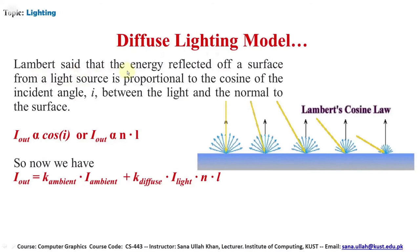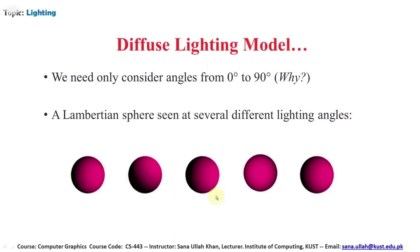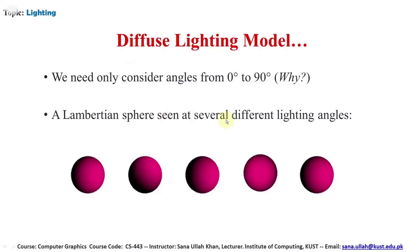The Lambert diffuse lighting model is calculated using Lambert's law: the energy reflected from a surface from a light source is proportional to the cosine of the incident angle i between the light and the normal to the surface. So I_out ∝ cos(i), or I_out ∝ N·L. The full equation is: I_out = K_ambient × I_ambient + K_diffuse × I_light × cos(i). We need only consider angles from 0 to 90 degrees, as the surface limits what angles are seen.